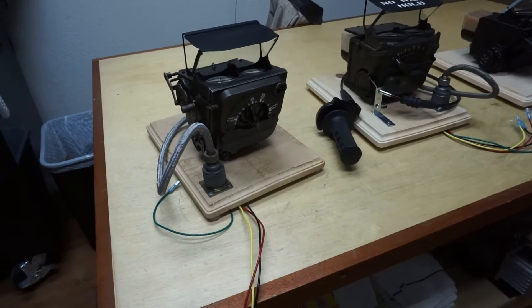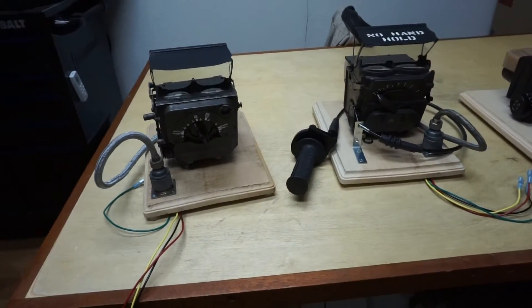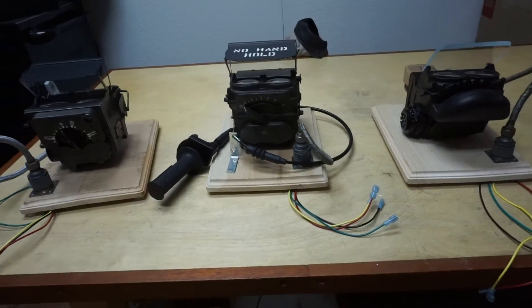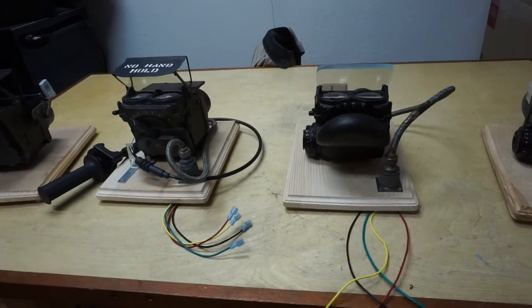This is an introduction to the gyro gun sights as used by the British and the United States Army Air Forces in World War II.